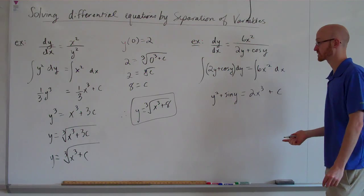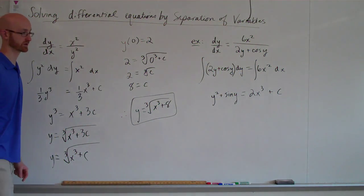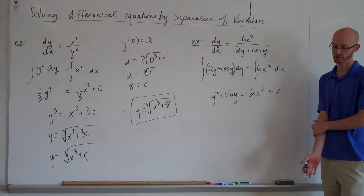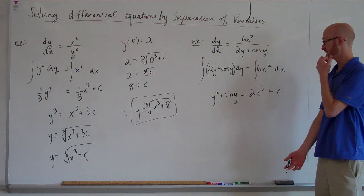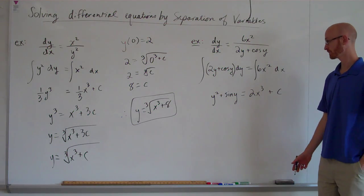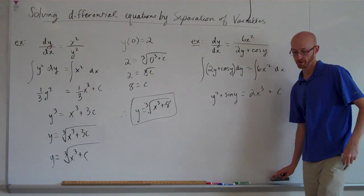And at this point, you think to yourself, well, in the last one, we were able to find y as an explicit function. Well, in this case, we're just able to find y as an implicit function. And that's not the end of the world. It just is what it is. We're not equipped to isolate y and find an explicit function.